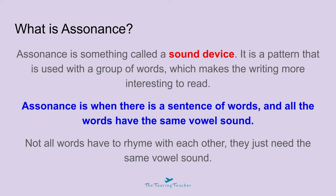Let's get started. So first of all you might be wondering, what is assonance? Assonance is something called a sound device. It is a pattern that is used with a group of words which makes the writing more interesting to read. Assonance is when there is a sentence of words and all the words have the same vowel sound.